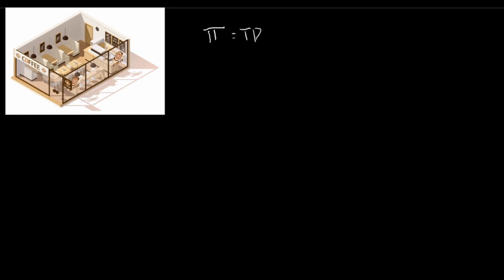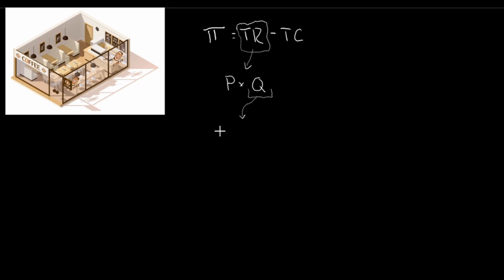For this section, we're going to focus on our profit equation: profit is total revenue minus total cost. We'll focus on the total revenue side. Keep in mind that total revenue is the price we can sell each unit for times the number of units we produce and sell. We're going to take one step further and look inside this Q — this quantity of units we're able to produce.